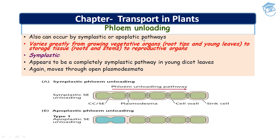Phloem unloading varies greatly from growing vegetative organs such as root tips and young leaves, to storage tissues such as root and stem, to reproductive organs. Via the symplastic pathway, it appears to be a completely symplastic pathway in young dicot leaves, moving through open plasmodesmata — from sieve element to companion cell, then to further cells, and finally reaching the sink cell.